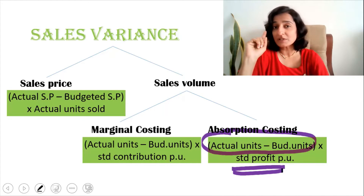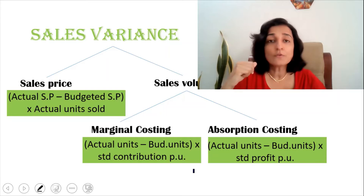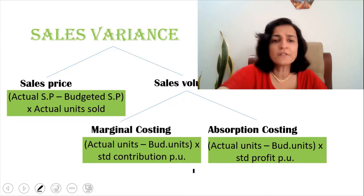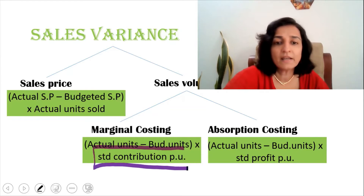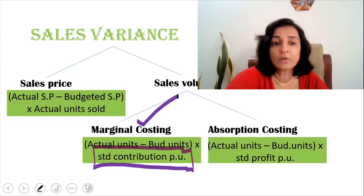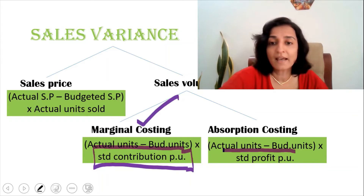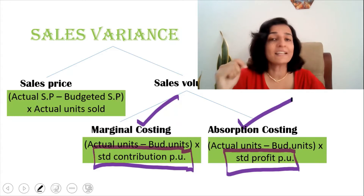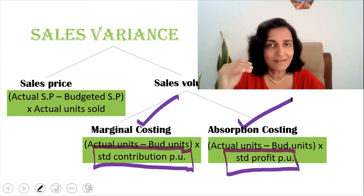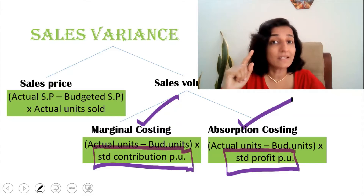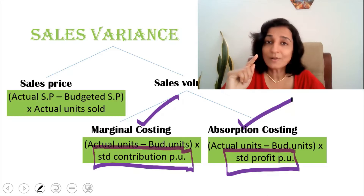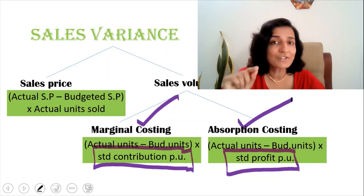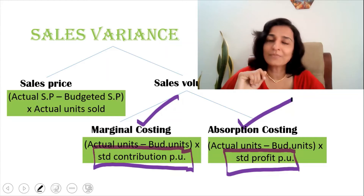This is the key difference between the marginal costing and absorption costing formulas. For those wondering why the difference in units is multiplied by standard contribution per unit under marginal costing and standard profit per unit under absorption costing, I have given a detailed explanation with an example in the upcoming video on introduction to budgeting. I request all students to take a look at that video for a clearer picture of why the formulas work this way.